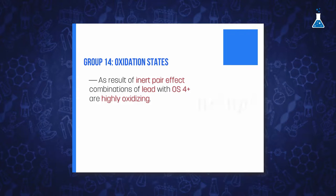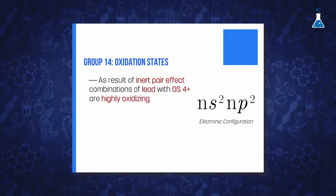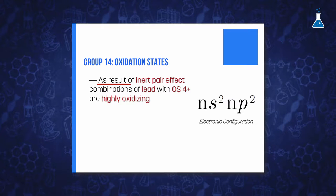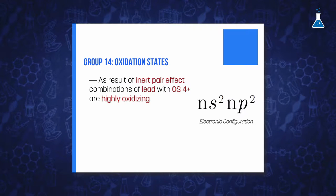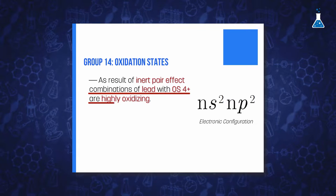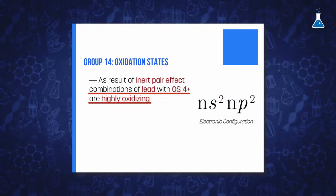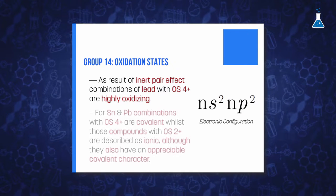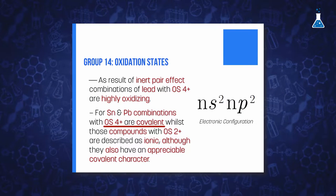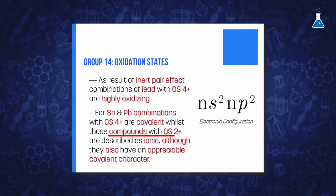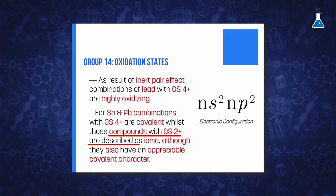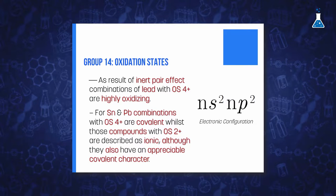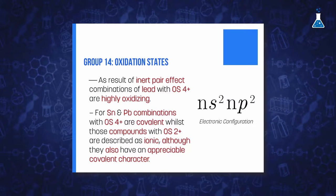However, the tendency to exhibit the maximum oxidation state decreases as you move down the group as a result of the inert pair effect, and therefore compounds of lead in oxidation state 4+ are highly oxidizing. Compounds in oxidation state 4+ are usually covalent, even for the two metals of the group, due to the high value of the sum of the four ionization energies, while compounds in oxidation state 2+ are described as ionic for tin and lead, although they also have an appreciable covalent nature.